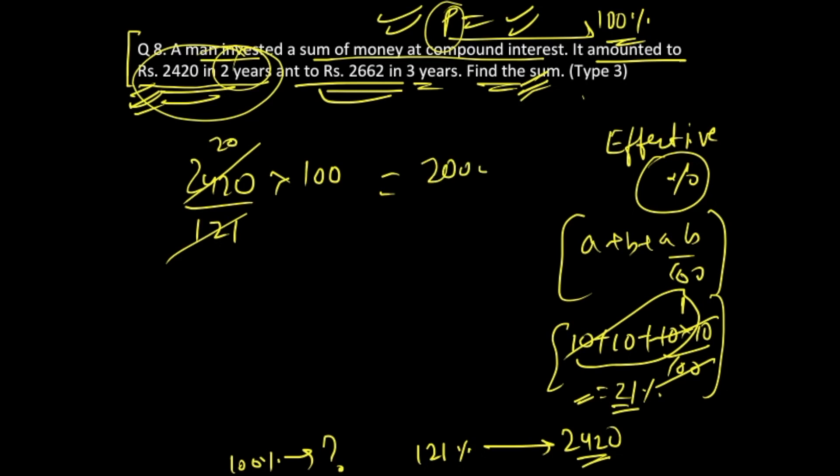You are going to get your answer as Rs. 2000. So 2000 which was invested becomes 2420 in two years and 2662 in three years, with rate of interest as 10 percent, which we had also calculated. Right. So this is going to be the process.